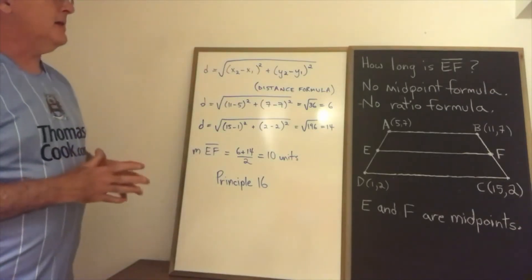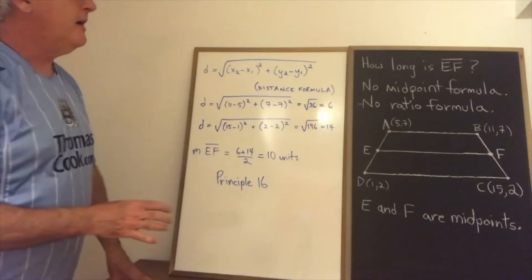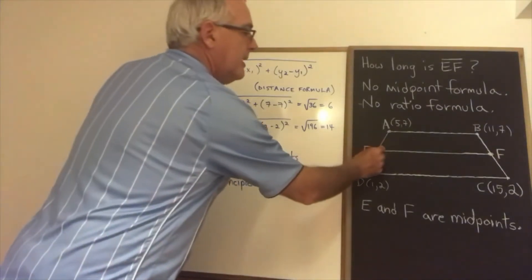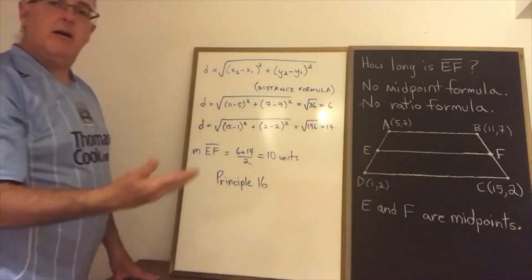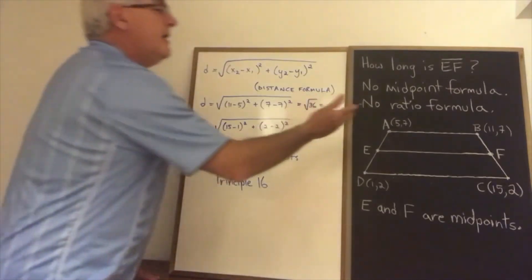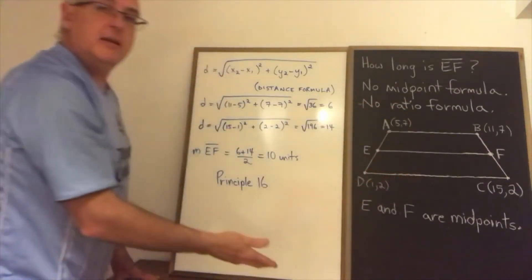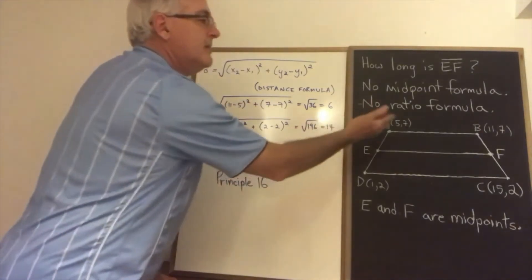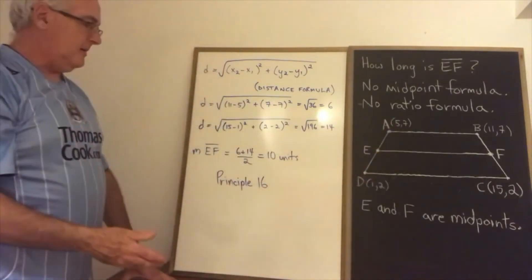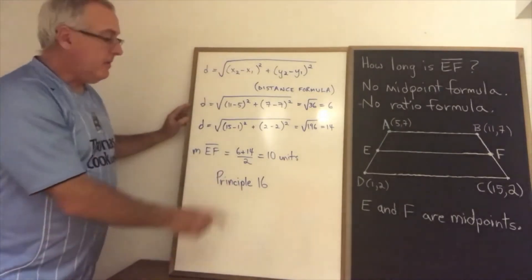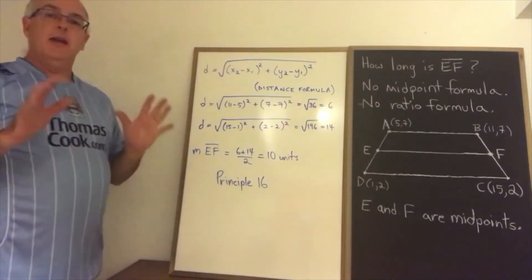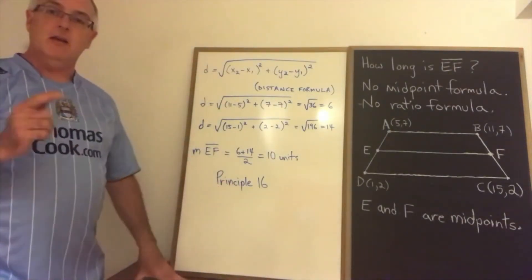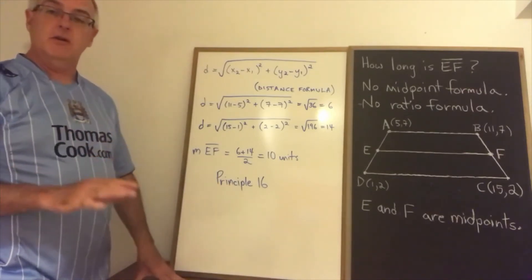Principle 16 says that in a trapezoid, the segment connecting the midpoints of the two non-parallel sides is parallel to the two bases and is half the length of the sum of those two bases. And then I justify by saying principle 16. Now this is principle 16 in the course I'm teaching, Math 4273.